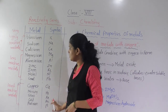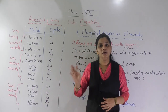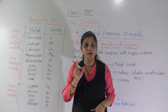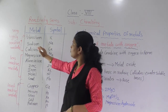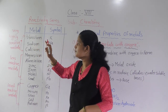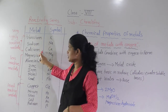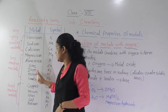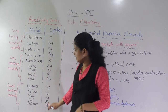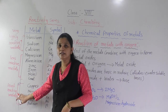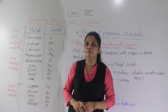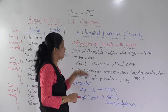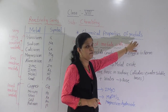So write down this reactivity series in your chemistry notebook, and memorize it. Highly reactive metals: potassium, sodium, calcium. Then less reactive metals. And last, these are least reactive metals. Now we will start our actual point — that is the chemical properties of metals.